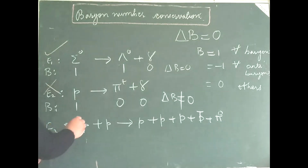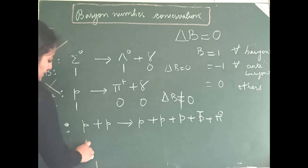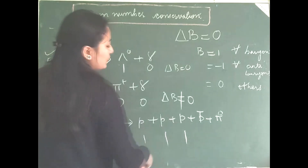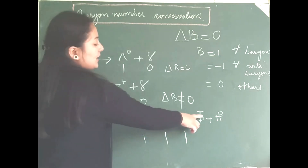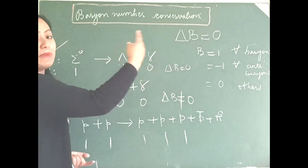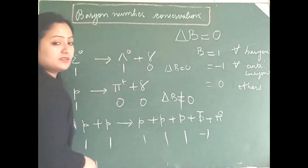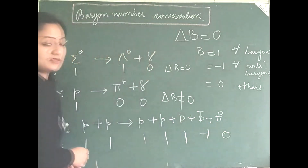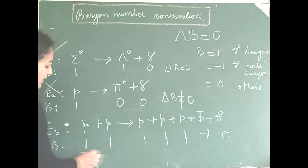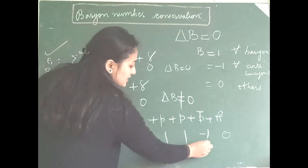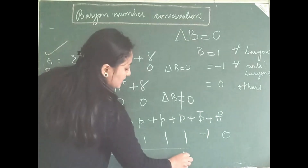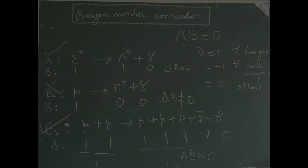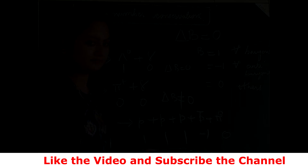Let us look into the third example. Baryon number is 1 for proton, and everything on the left side is proton so it is 1 and 1. The anti-proton is an anti-baryon, so minus 1. Pi 0 is a meson, so 0. The left-hand side gives 2, and the right-hand side also gives 1 minus 1 plus 0 plus 0 plus ... totalling 2. So delta B equals 0, and baryon number is conserved in this interaction.